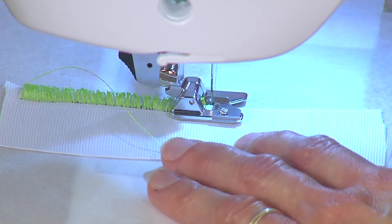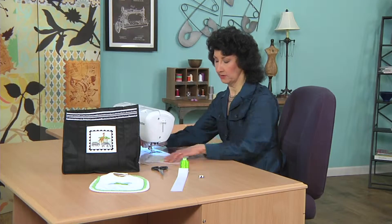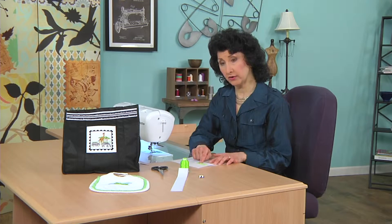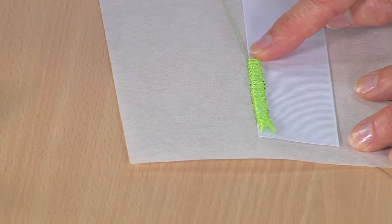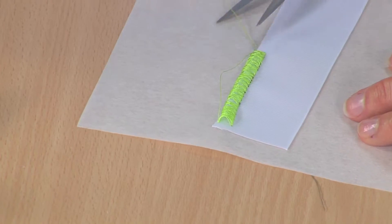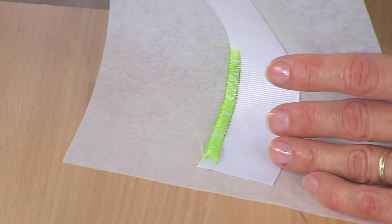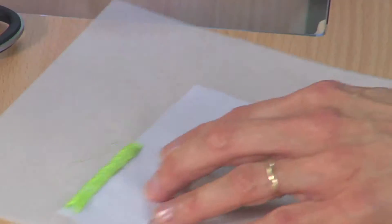I'm going to raise up my needle. And you can see there are the loops there formed right over that ribbon. This is a two-step process. So once I've created my loops, I only have one more step to go.